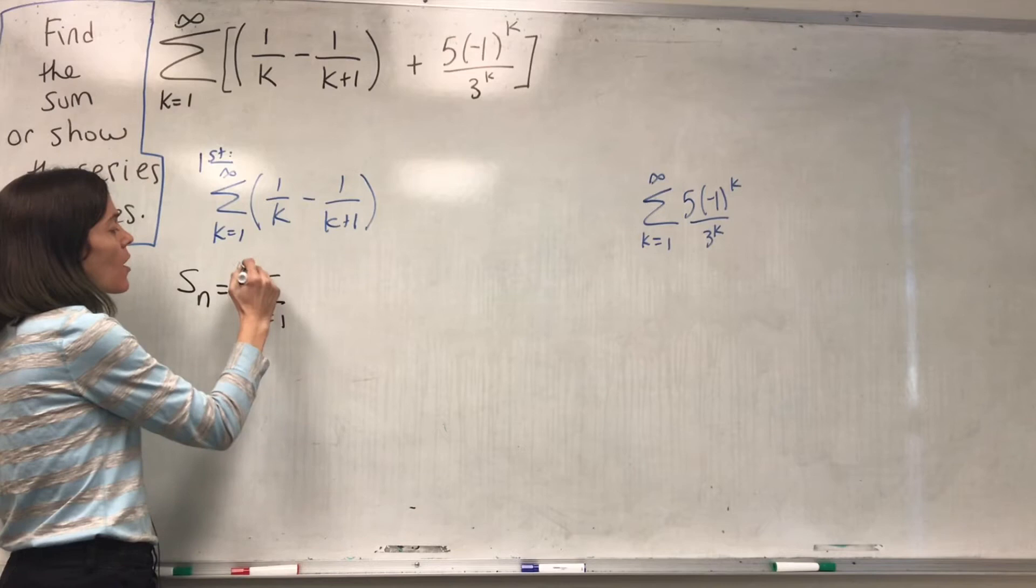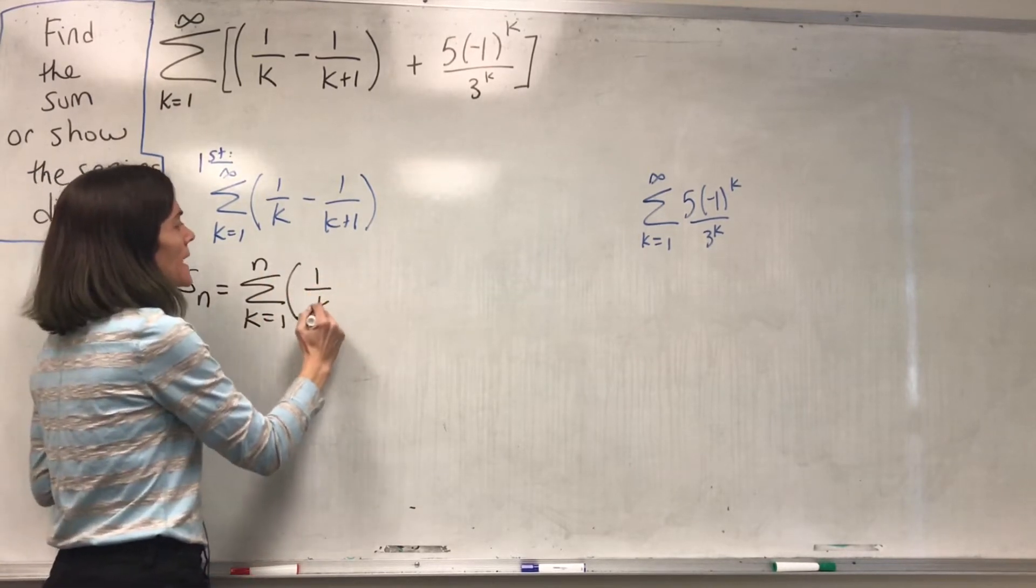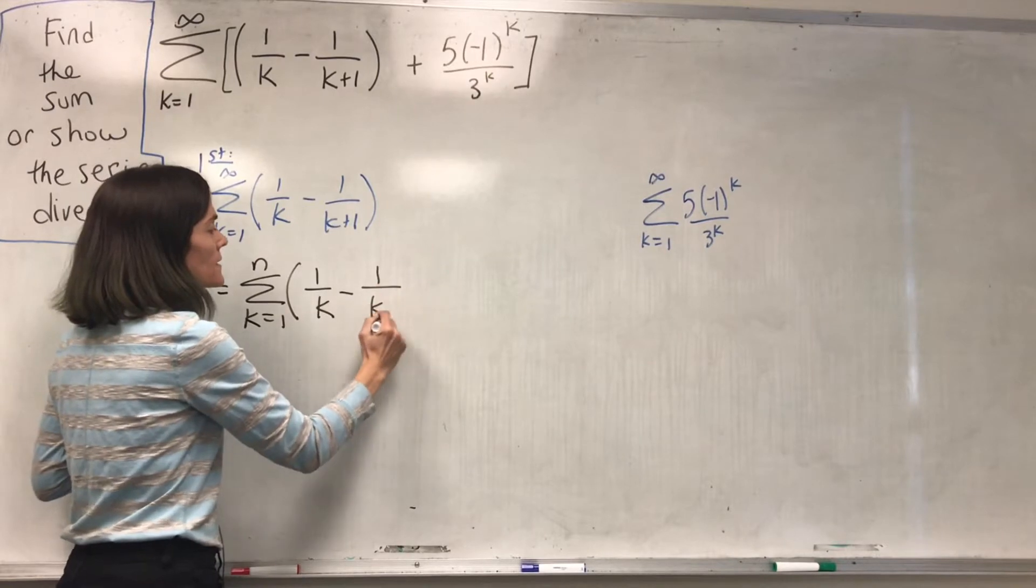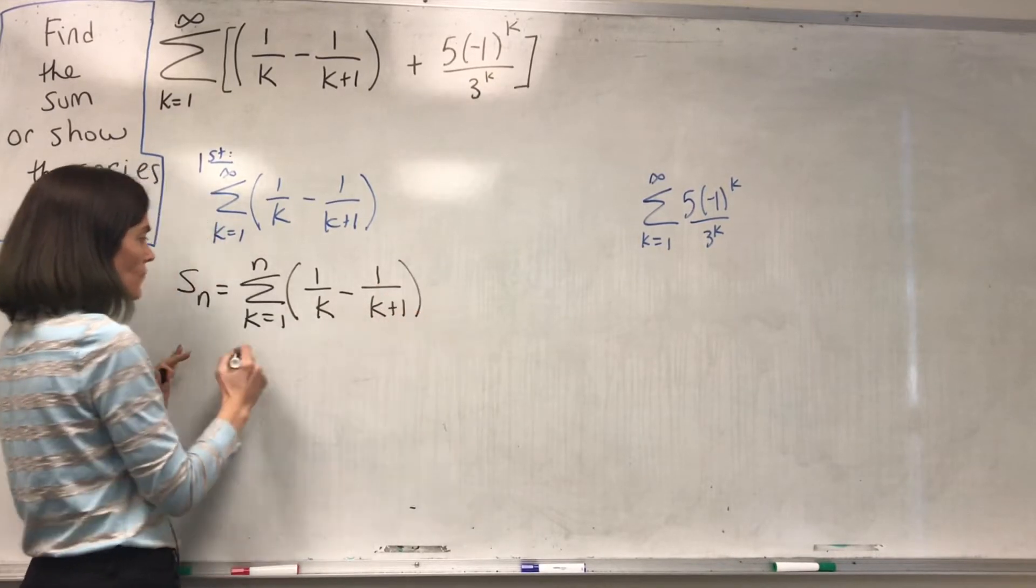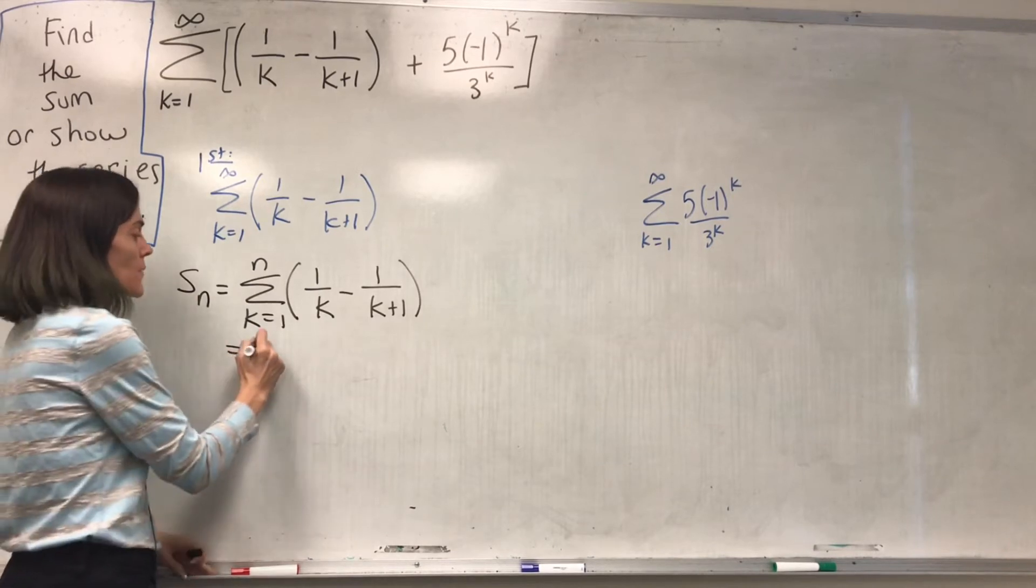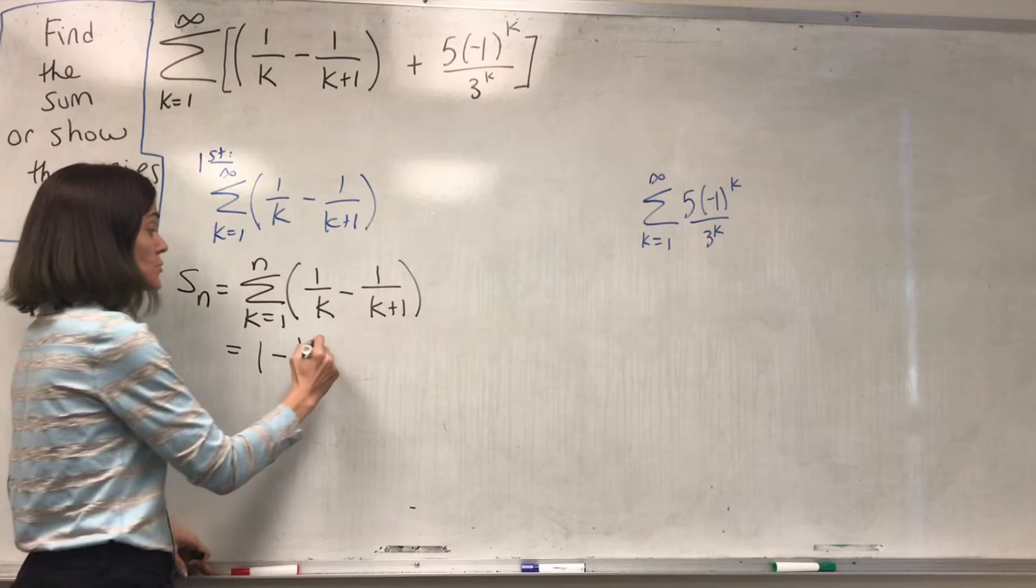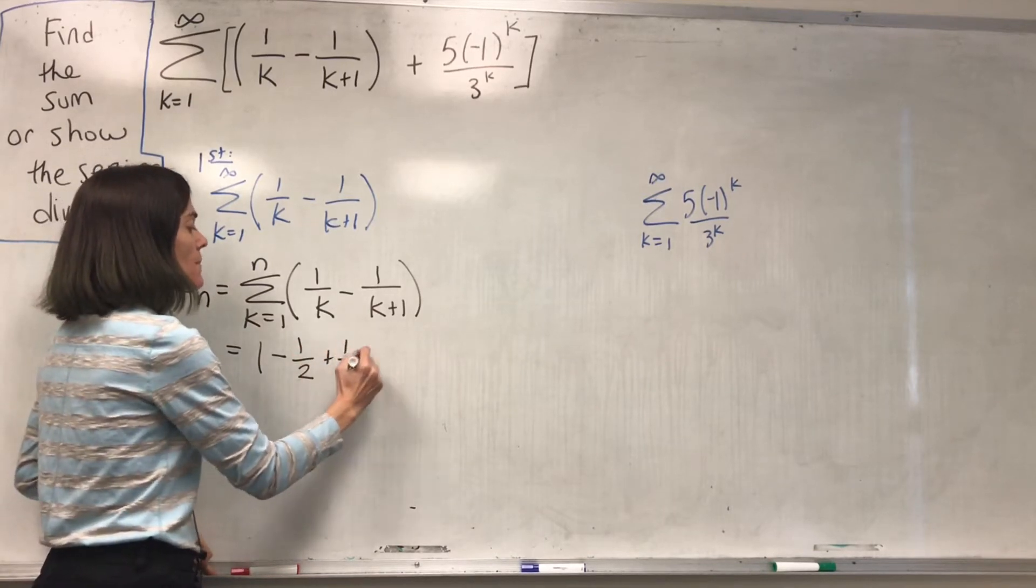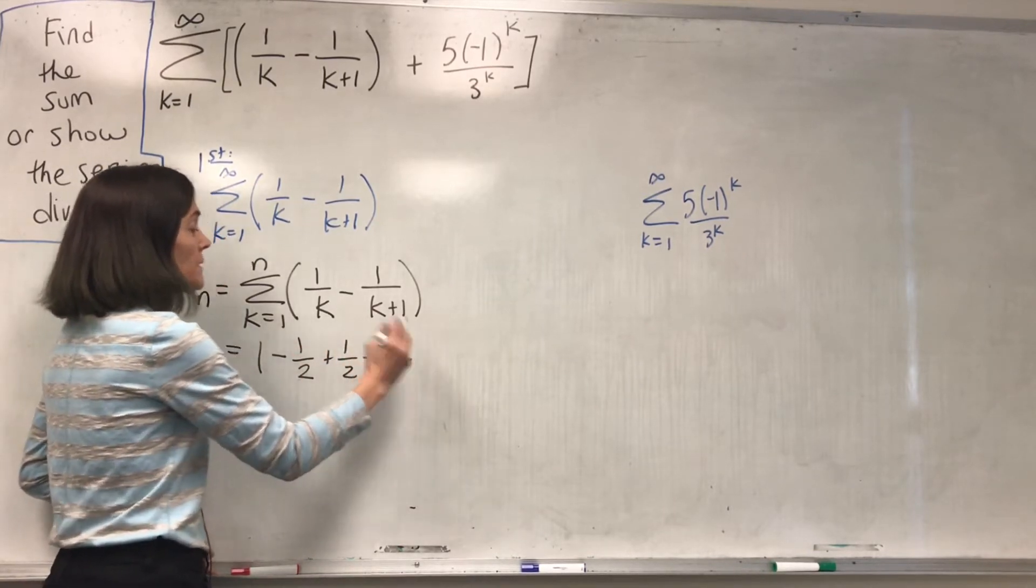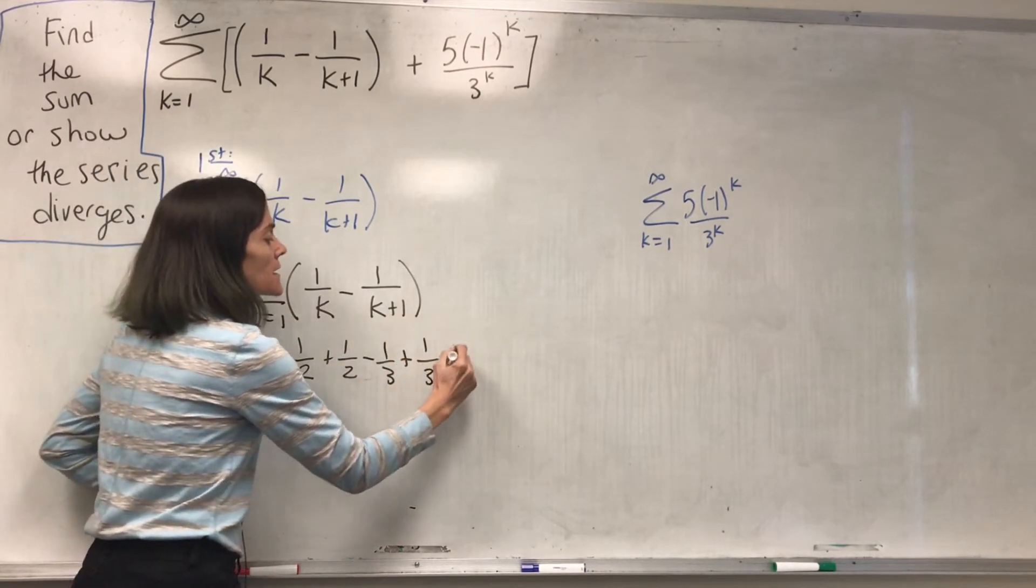Well, we add all the way up to the nth term, and now I will start writing these. Here we go. Well, when k equals 1, we have 1 minus 1 half. When k equals 2, we have 1 half minus 1 third. When k equals 3, 1 third minus 1 fourth.